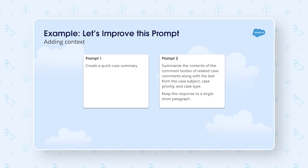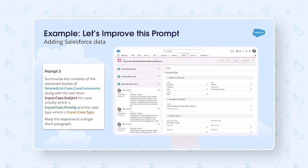Here in prompt two, we see a much better, much more written-out context: 'Summarize the contents of the comment bodies of related case comments along with the text from the case subject, case priority, and case type. Keep the response to a single short paragraph. Think like you were talking to a human.' A human reading prompt two will know a lot more about what you're trying to get from this prompt — same as the AI. But these are still missing one very vital thing: data. In order for it to really be successful, it's got to look at the data that you wanted to pull in.